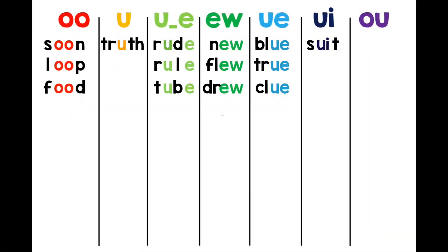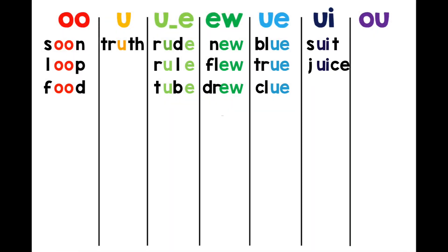We also spell OO as U-I. Let's look at some examples. Suit: S-U-I-T. Juice: J-U-I-C-E.